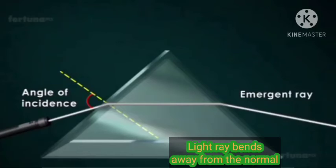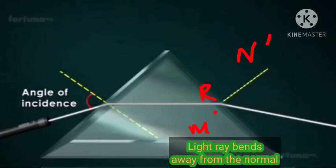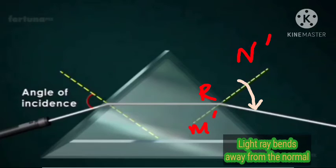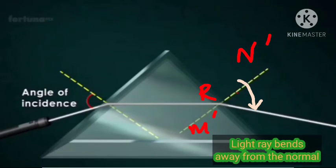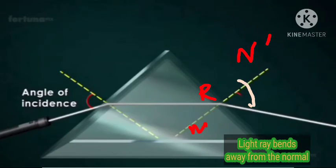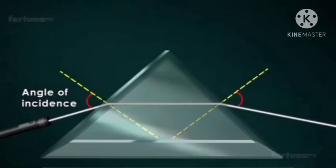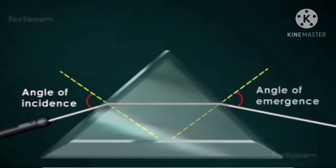RS is the emergent light ray. The emergent ray travels from denser to rarer medium and bends away from the normal N'RM' at face AC, traveling along RS. The angle formed between the normal and the emergent ray is the angle of emergence, angle SRN'.